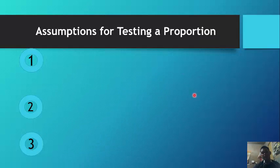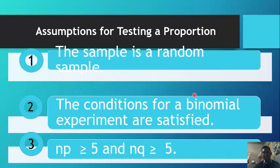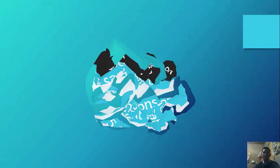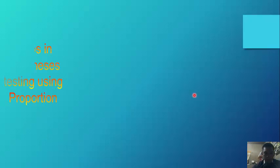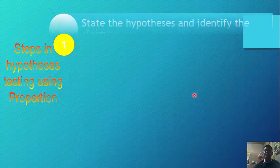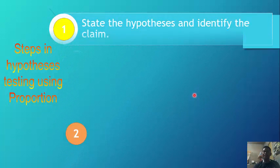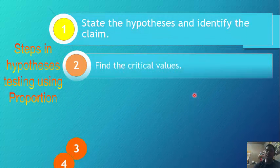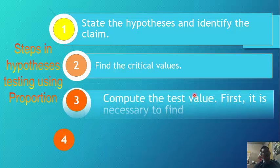Assumptions for testing a proportion: the sample is a random sample; the conditions for a binomial experiment are satisfied; and both np and nq are greater than or equal to 5. The steps are: state the hypothesis, find the critical values, compute the test value, and make the decision.